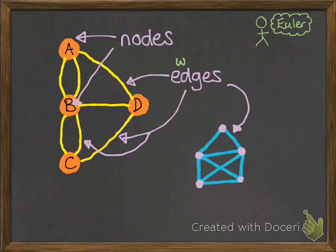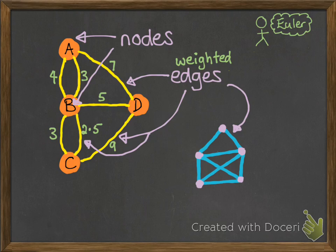Sometimes you get weighted edges, which gives us a little bit more information on the graph. For example, you might want to write down the distances between two places, two nodes, or the walking times. In the bridges problem, maybe it's the length of time in minutes that it takes to walk along a particular route, and that gives you a little bit more information.